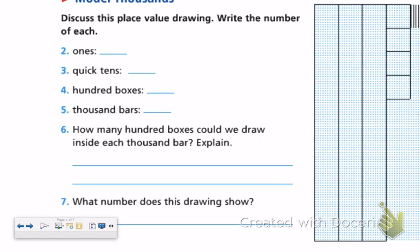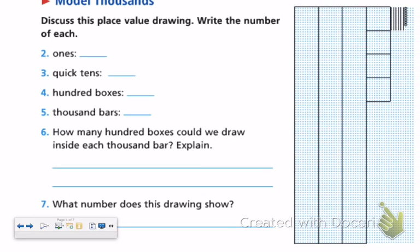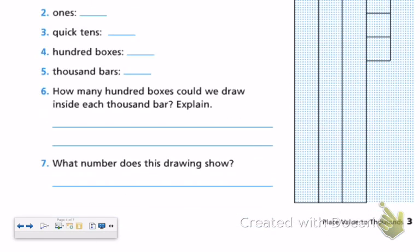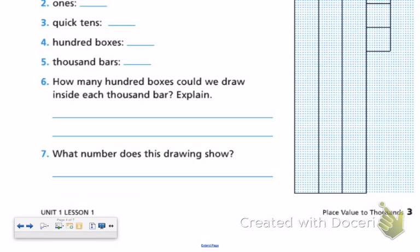So when looking at this, what we did is we went through and the students identified how many ones were there, how many quick tens, how many hundred boxes, and how many thousand bars. Referring to previous conversations, we then looked at how many hundred boxes we can draw inside each thousand bar, which just emphasizes what we've learned, and then what is the total amount shown.